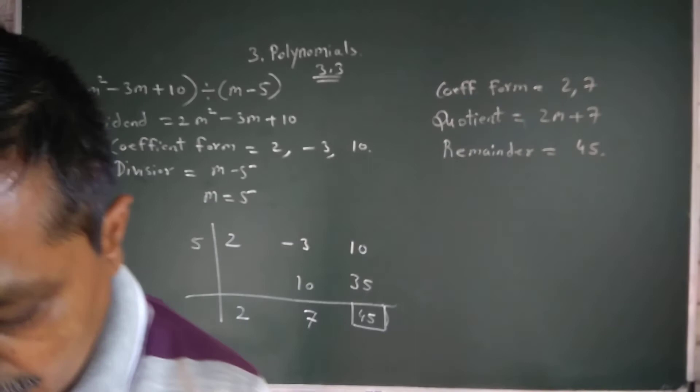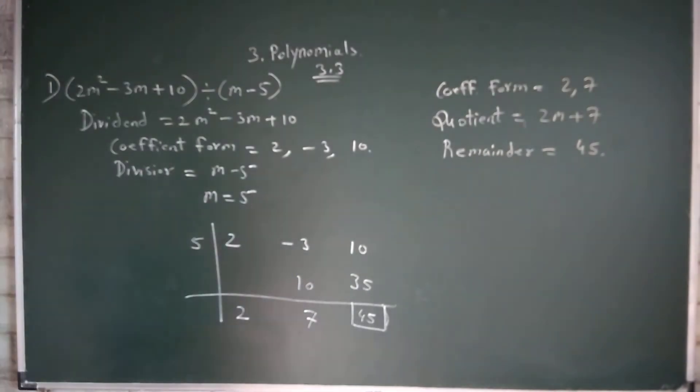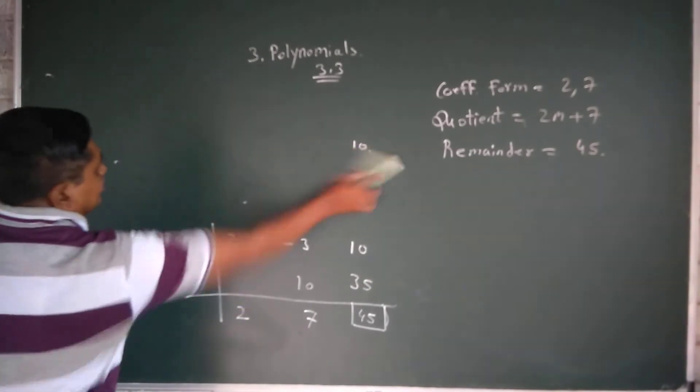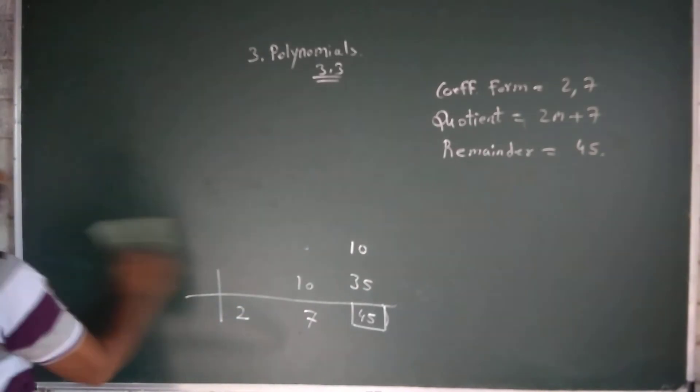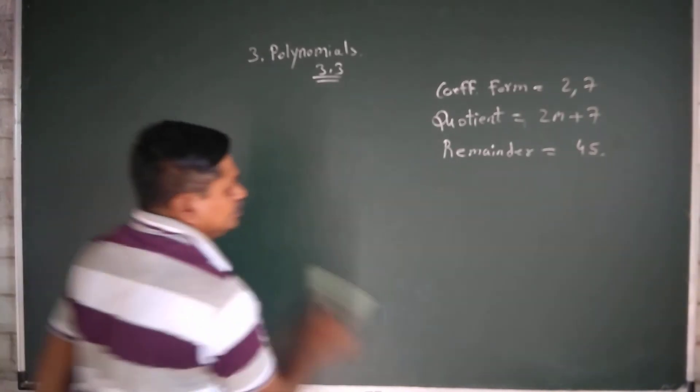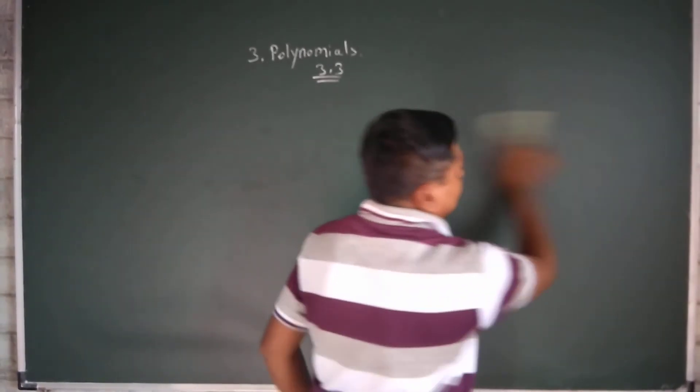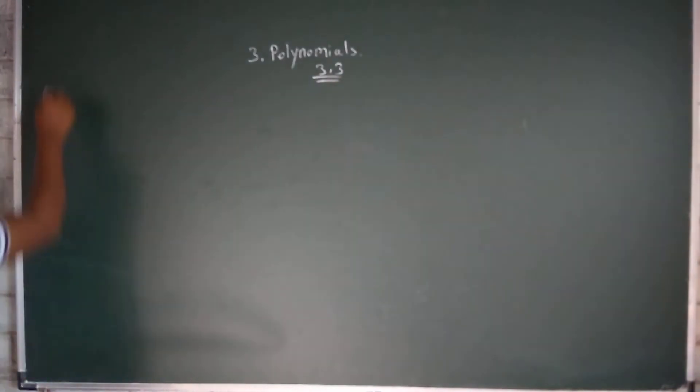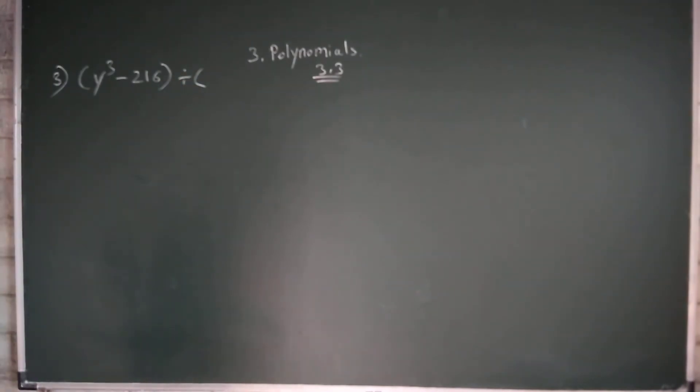For another, again we will take one example. Third one: y³ - 216 divided by y - 6.